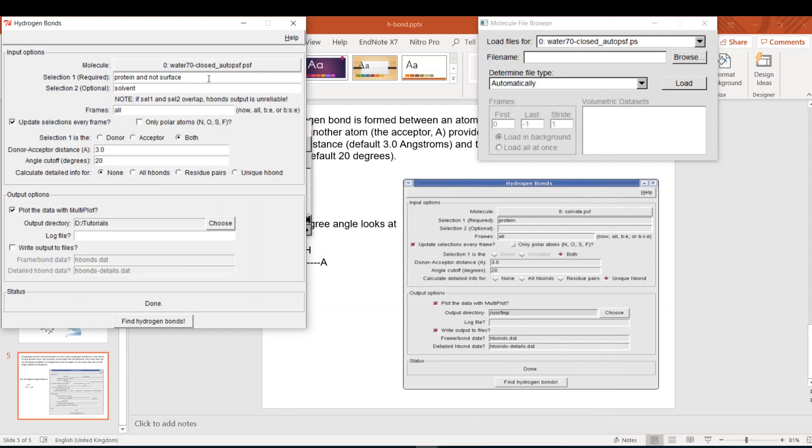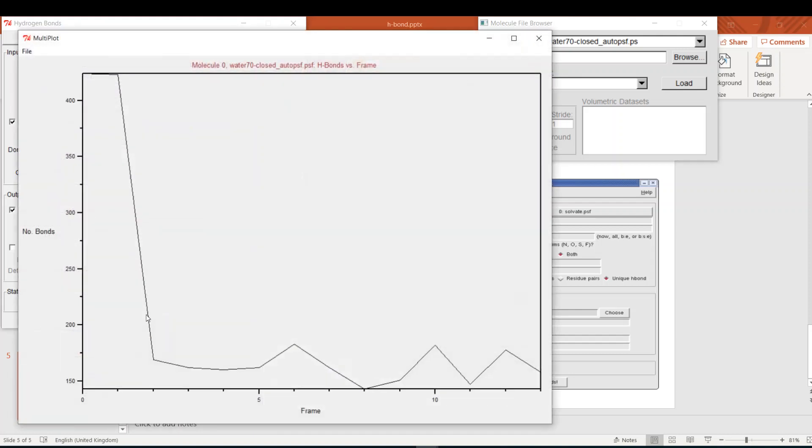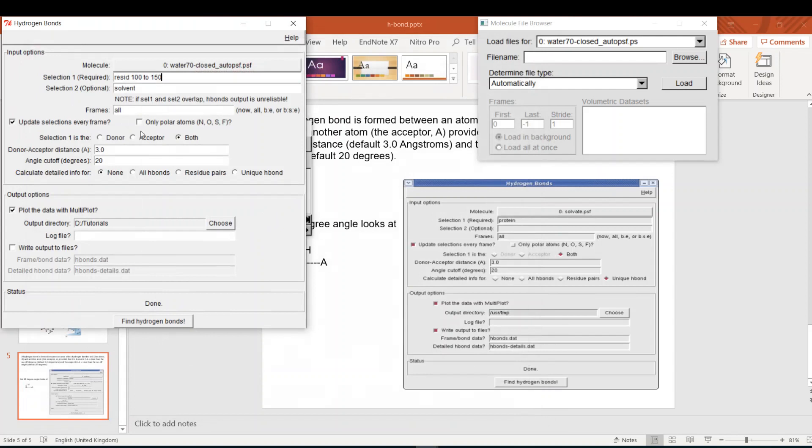In the selection language you can say resid 100 to 150. You can say protein and name whatever, C-alpha or etc. This will depend on your research question.